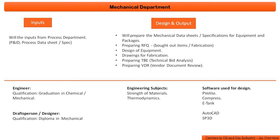The mechanical engineer should have a graduation in mechanical engineering; the drafts person or designer needs a diploma in mechanical. Core subjects are strength of materials and thermodynamics. Software used in mechanical design includes PV Elite and Compress for designing pressure vessels, AutoCAD, and SP3D - a 3D modeler where you can model equipment, piping, and everything in 3D with basic information.